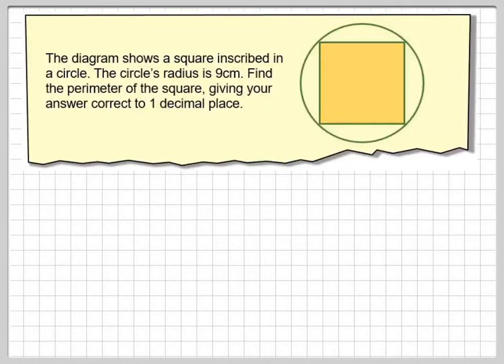The diagram shows a square inscribed inside a circle. The circle has a radius of 9 centimeters. Find the perimeter of the square, giving your answer correct to 1 decimal place.